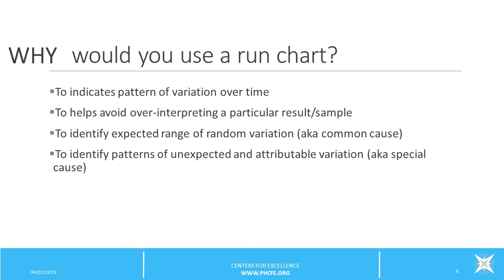In sum, there are many reasons to use a run chart. Run charts help a QI team monitor a process over time, indicate patterns of variation, and help avoid over-interpreting a particular result. They allow tracking before and after a process improvement, require little or no calculating, and can be created in real time. Run charts are helpful in identifying both common cause and special cause variation — a very important principle in quality improvement.